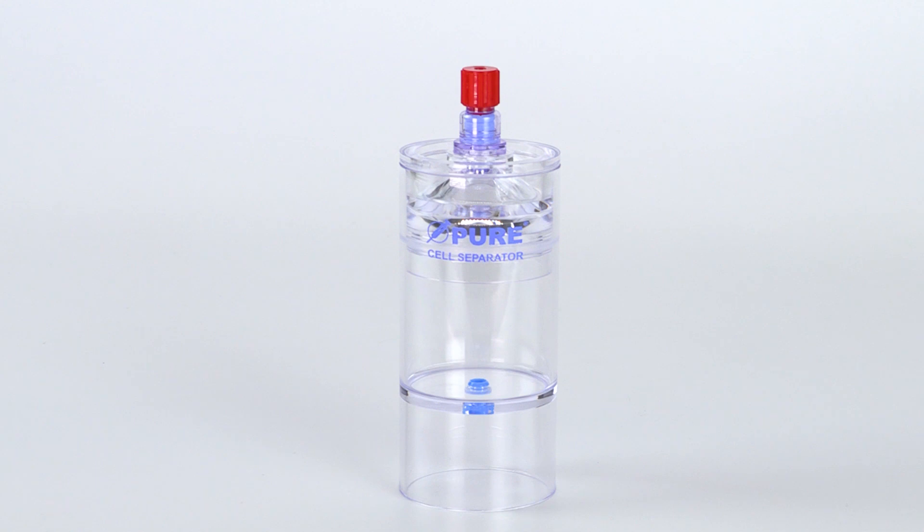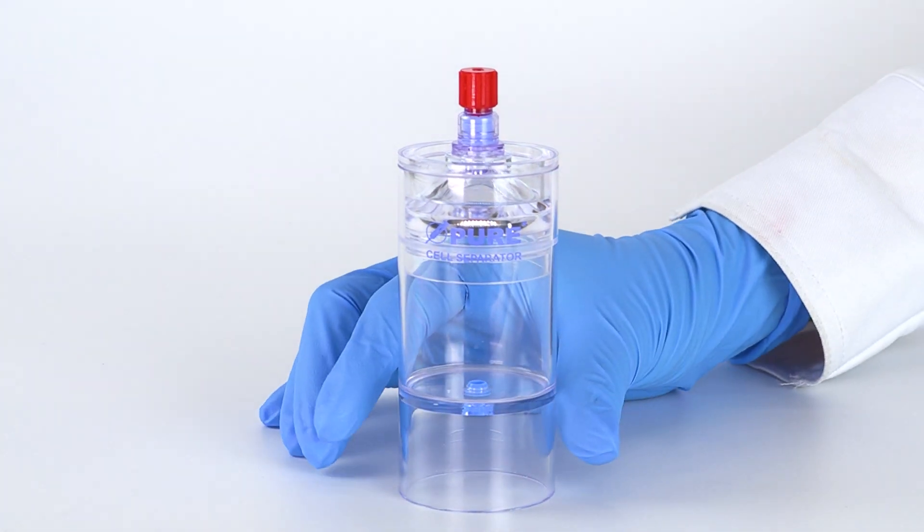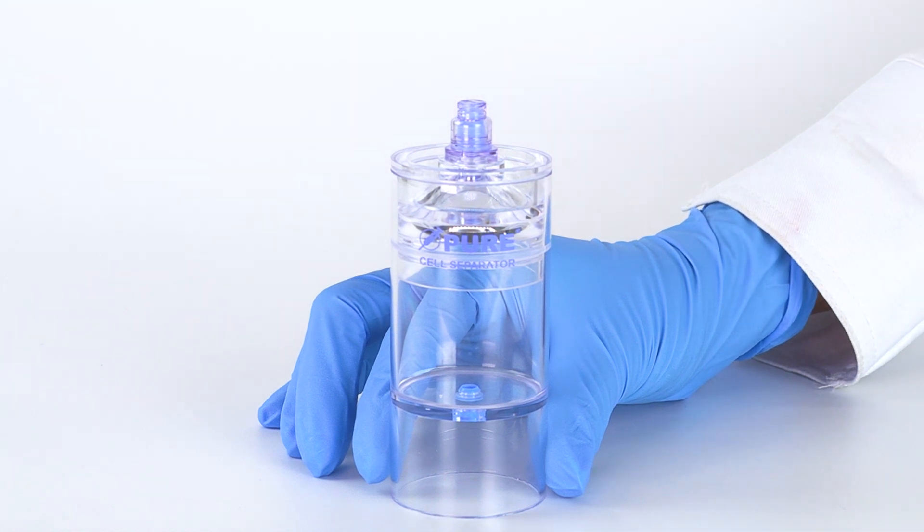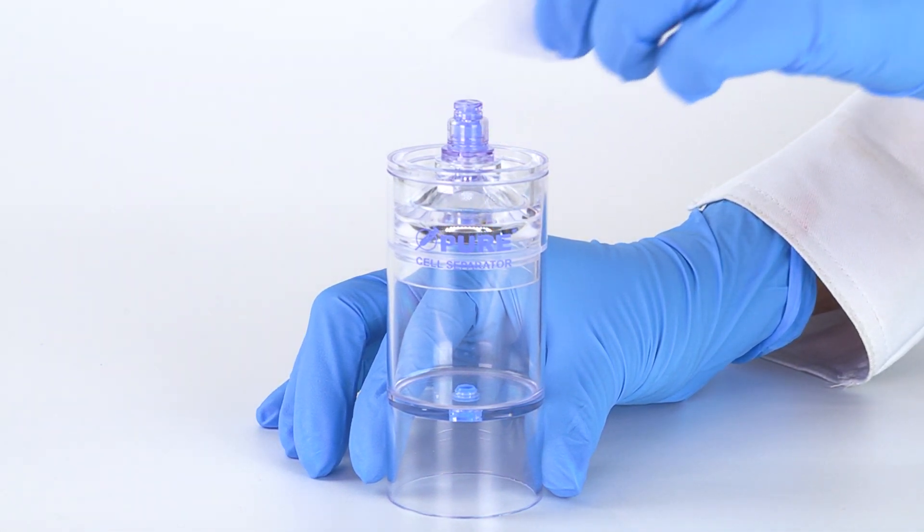To begin, remove the red cap from the needleless valve port of the separator device. Swab the port with sterile alcohol before and after accessing with a sterile syringe or cap.